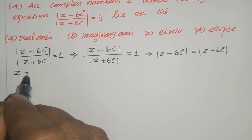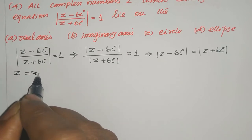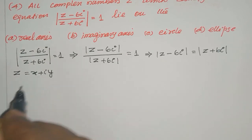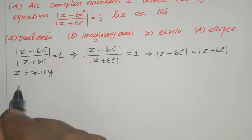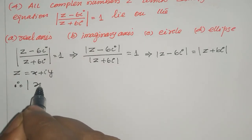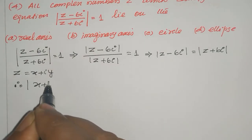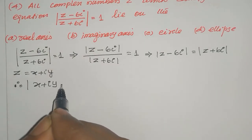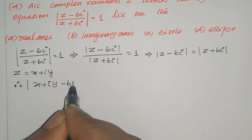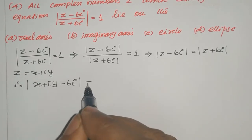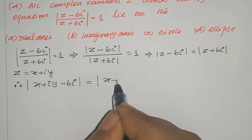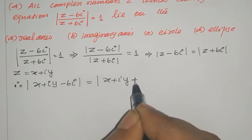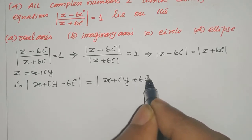Let z equal to x plus i y. Substitute in the first place. Left side becomes modulus of x plus iy minus 6i. Right side becomes modulus of x plus iy plus 6i.